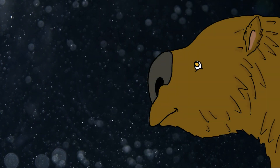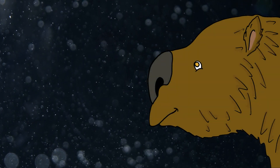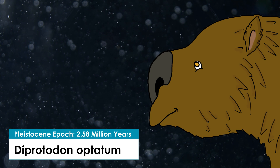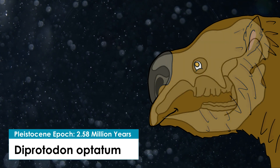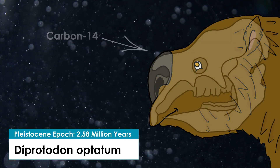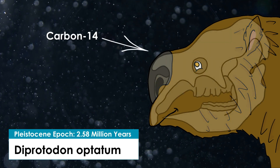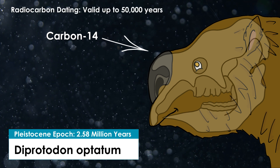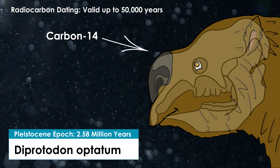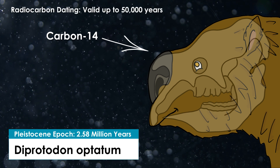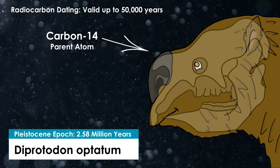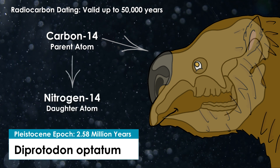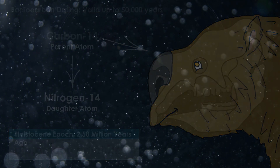For example, a mammal that lived during the Pleistocene epoch called a Diprotodon optatum has a skeleton containing the isotope carbon-14, so radiocarbon dating is used to date the bones, where carbon-14 — the initial parent atom — decays to nitrogen-14, which is the daughter atom.